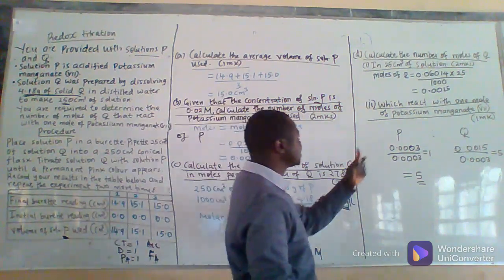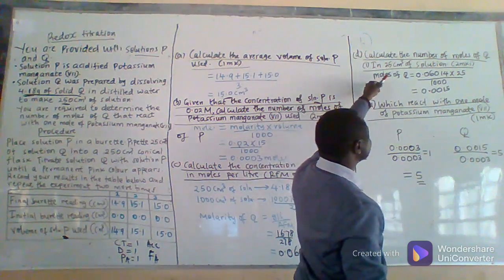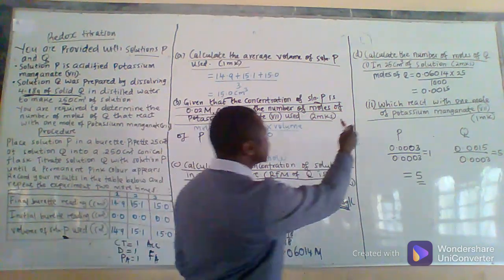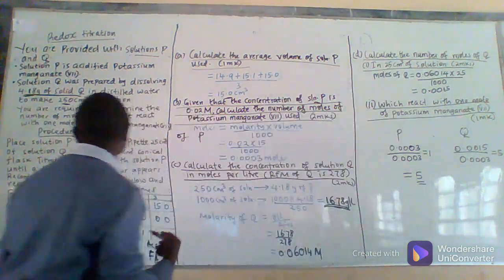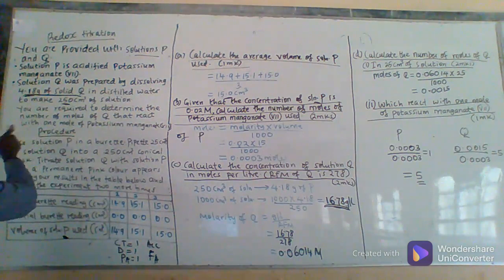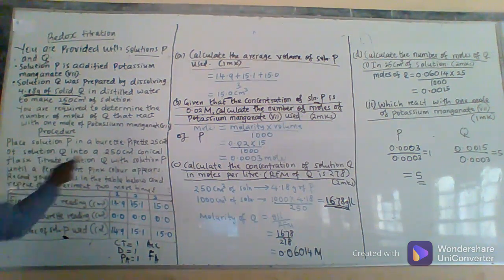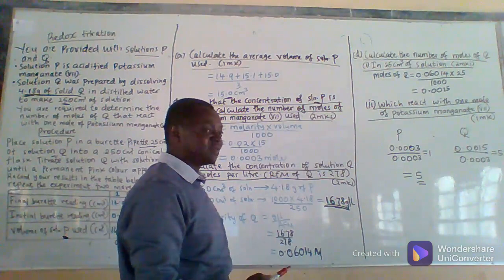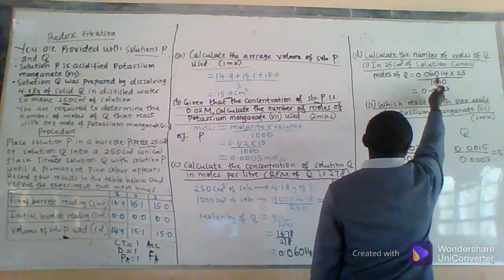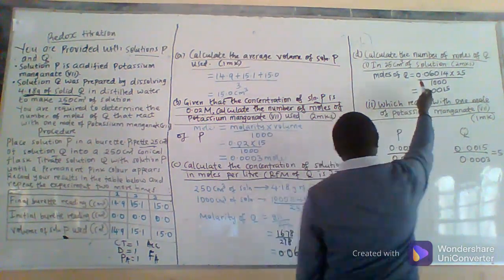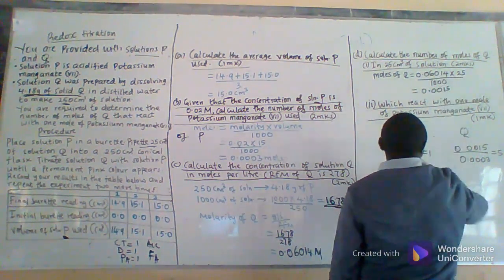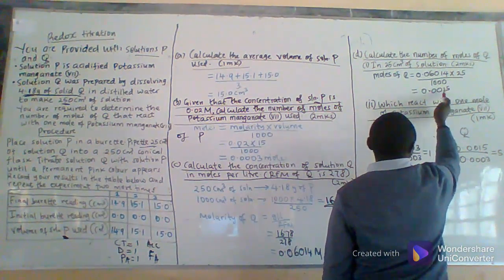The next question asks for the number of moles of Q that are in 25 cm³ of solution Q. Now that we have the molarity of Q, and we know the volume of solution Q is 25 cm³ (as stated in the procedure), the moles of Q are given by: moles of Q = molarity of Q × volume ÷ 1000 = 0.06014 × 25 ÷ 1000, so we get 0.0015 moles. Those are the moles of Q that reacted with P.